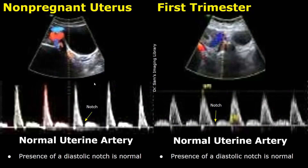Hello everyone, this is Dr. Sam, and this video is about uterine artery Doppler ultrasound. These are spectral Doppler waveforms of the uterine artery. The image on the left shows the spectral Doppler waveform of the uterine artery in a non-gravid uterus. It consists of a high resistance waveform with a sharp systolic peak. An early diastolic notch is usually seen — this groove right here is the notch. This is normal in a non-gravid uterus.